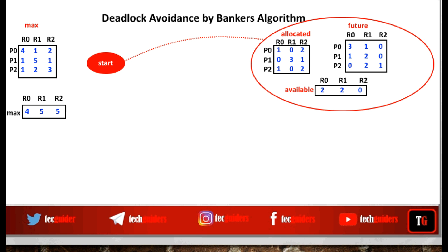We shall confirm whether this state is a safe state. If this state is a safe state, with these available resources we will be able to complete the execution of all three processes by granting their maximum future needs by executing them in some sequence. Can we execute P0 now with these available resources? No, because P0 needs three instances of R0 and we have only two instances of R0.